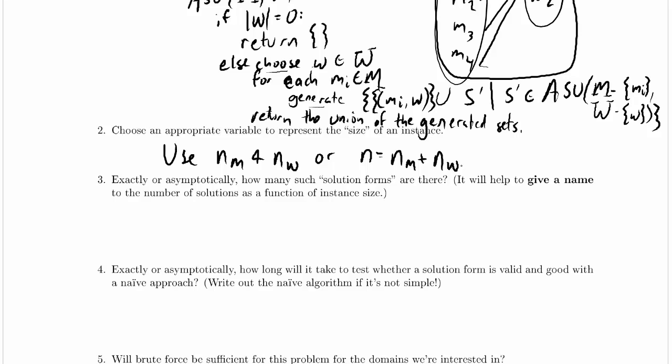So that would make n the larger number. Or n equals nm, which is greater than or equal to nw. They're kind of all reasonable choices. We'll use whichever one feels good.